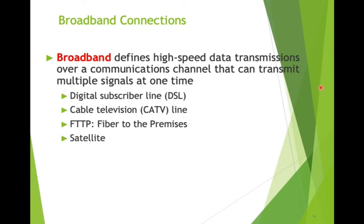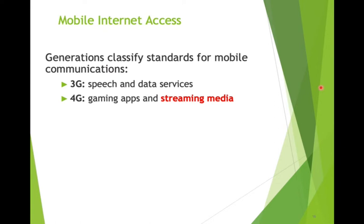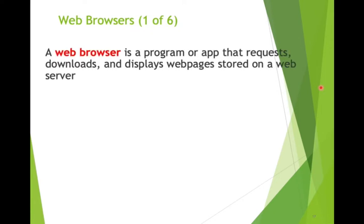Mobile wireless technologies include Bluetooth — named after King Harold Bluetooth Gormason of Denmark, who introduced Christianity to Denmark; the creator was a history buff. We also know Wi-Fi (wireless fidelity) and cellular telephones: 3G, 4G for gaming and streaming media. We're working on 5G nowadays because our demand for faster services is growing.